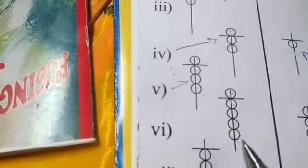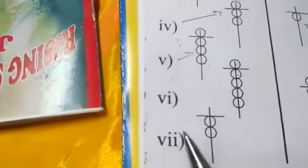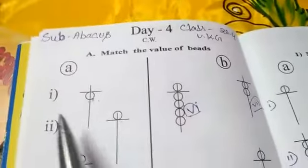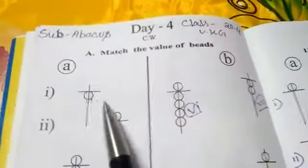Question number six: five, six, seven, eight, nine. Question number seven: two. Okay, now you have to match these.